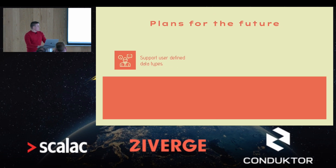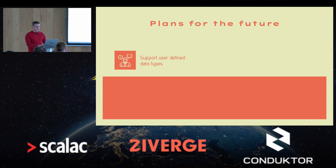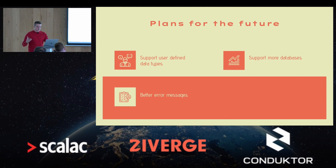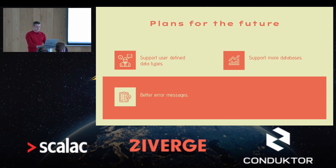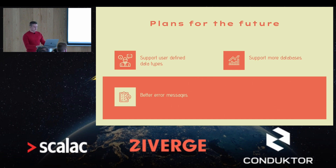What are our plans for the future? We'd like to push Zio Schema all the way through so you wouldn't define your table with the DSL — you'd just write a case class and Zio Schema would generate the columns for you. We also want to support more databases; currently PostgreSQL is the most feature-complete, but architecturally ZioSQL allows as many databases as needed. We also want to improve error messages, since currently the compiler tells you something is wrong but it's not always obvious what.